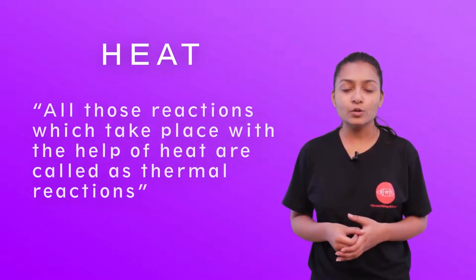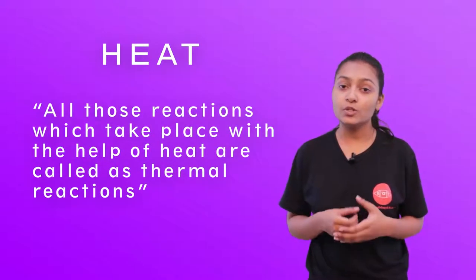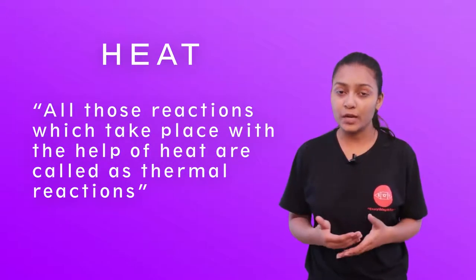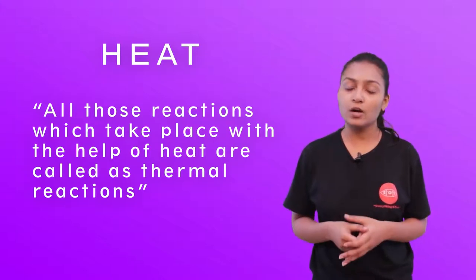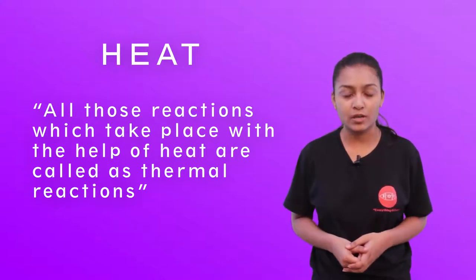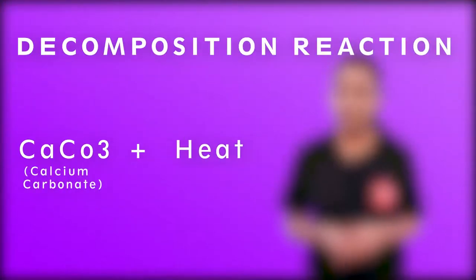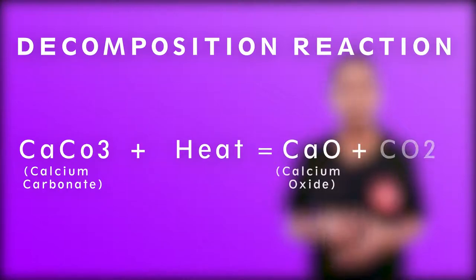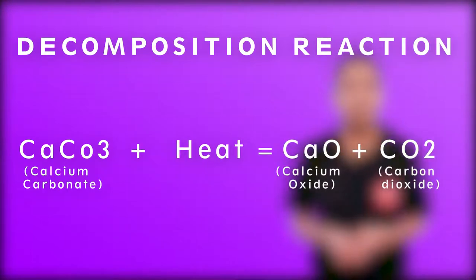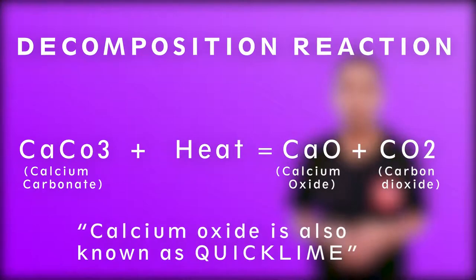Let us first take heat. All those reactions which take place with the help of heat are called thermal reactions. For example, when calcium carbonate is heated, it forms calcium oxide plus carbon dioxide. Calcium oxide is also called quicklime. We have seen the same example in the previous video as well.